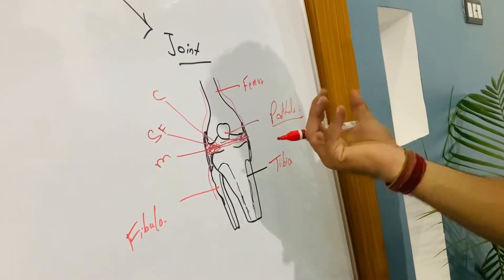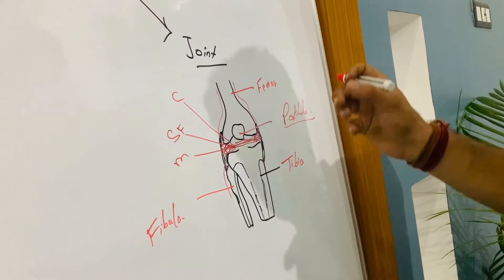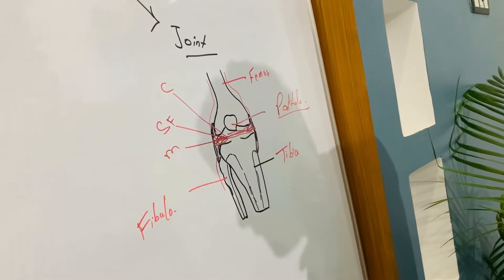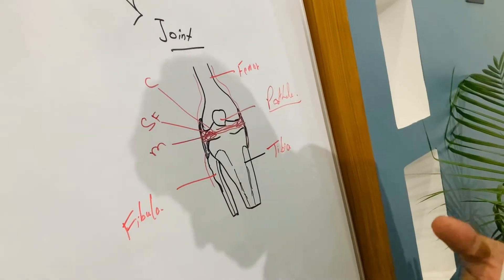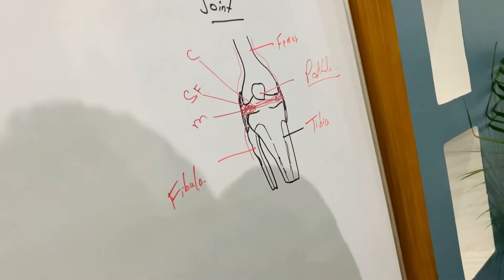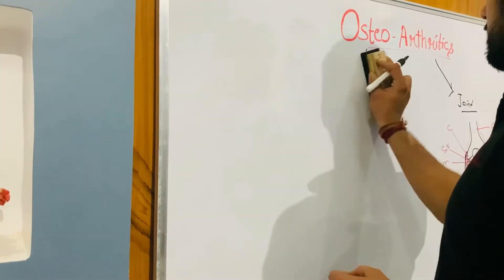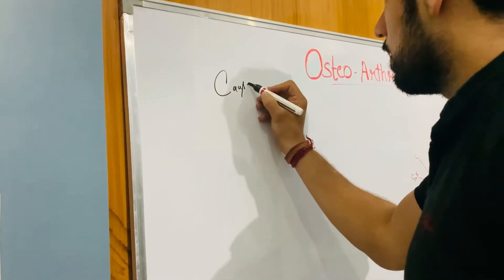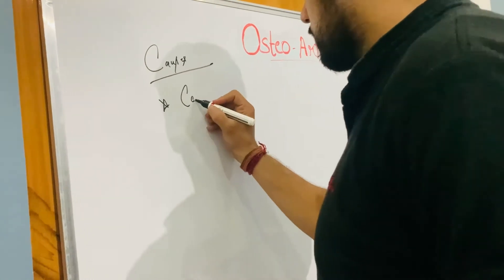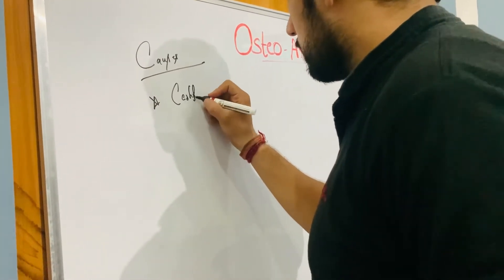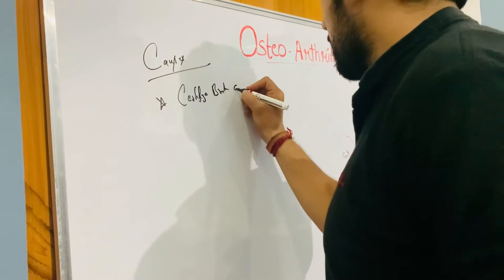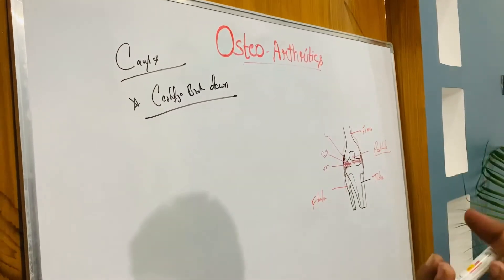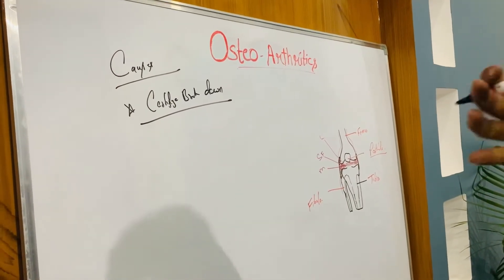When the joint gap is reduced and bones become rugged, the patient experiences pain, swelling, and tenderness. The range of motion decreases. As the condition progresses, the cartilage, which provides a soft cushion in the joint, breaks down further, the bones become rough, and pain starts.